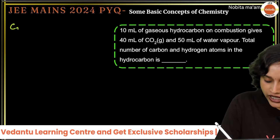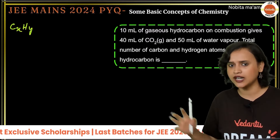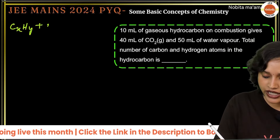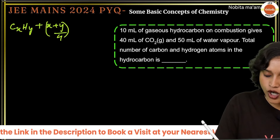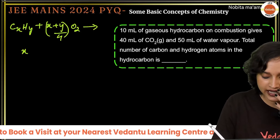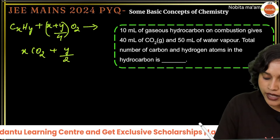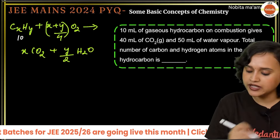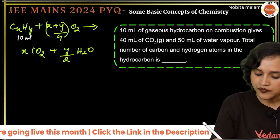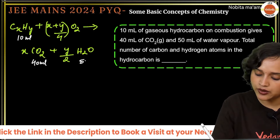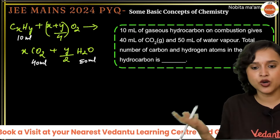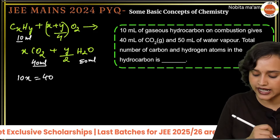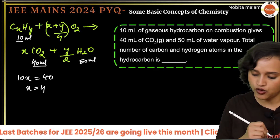In general, for a hydrocarbon CₓHᵧ, combustion requires (x + y/4) moles of O₂ and gives x moles of CO₂ and y/2 moles of water. According to the question, 10 mL of hydrocarbon gives 40 mL of CO₂ and 50 mL of water. So: 10x = 40, giving x = 4; and 10 × (y/2) = 50, giving y = 10.